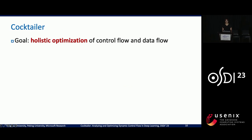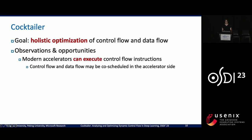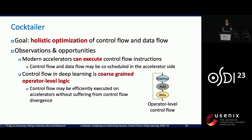To address the rigid partitioning issue of control flow and data flow, we propose Cocktailer, a deep learning compiler that enables holistic optimization of control flow and data flow. Our design is based on two observations. Firstly, accelerators can execute control flow instructions, which allows us to co-schedule both control flow and data flow on the accelerator side. Secondly, control flow in deep learning is a coarse-grained operator-level logic — the whole operator has the same control logic. Therefore, control flow may be efficiently executed on accelerators if properly scheduled, and may not encounter issues like control flow divergence as when executing general control flow on GPUs.